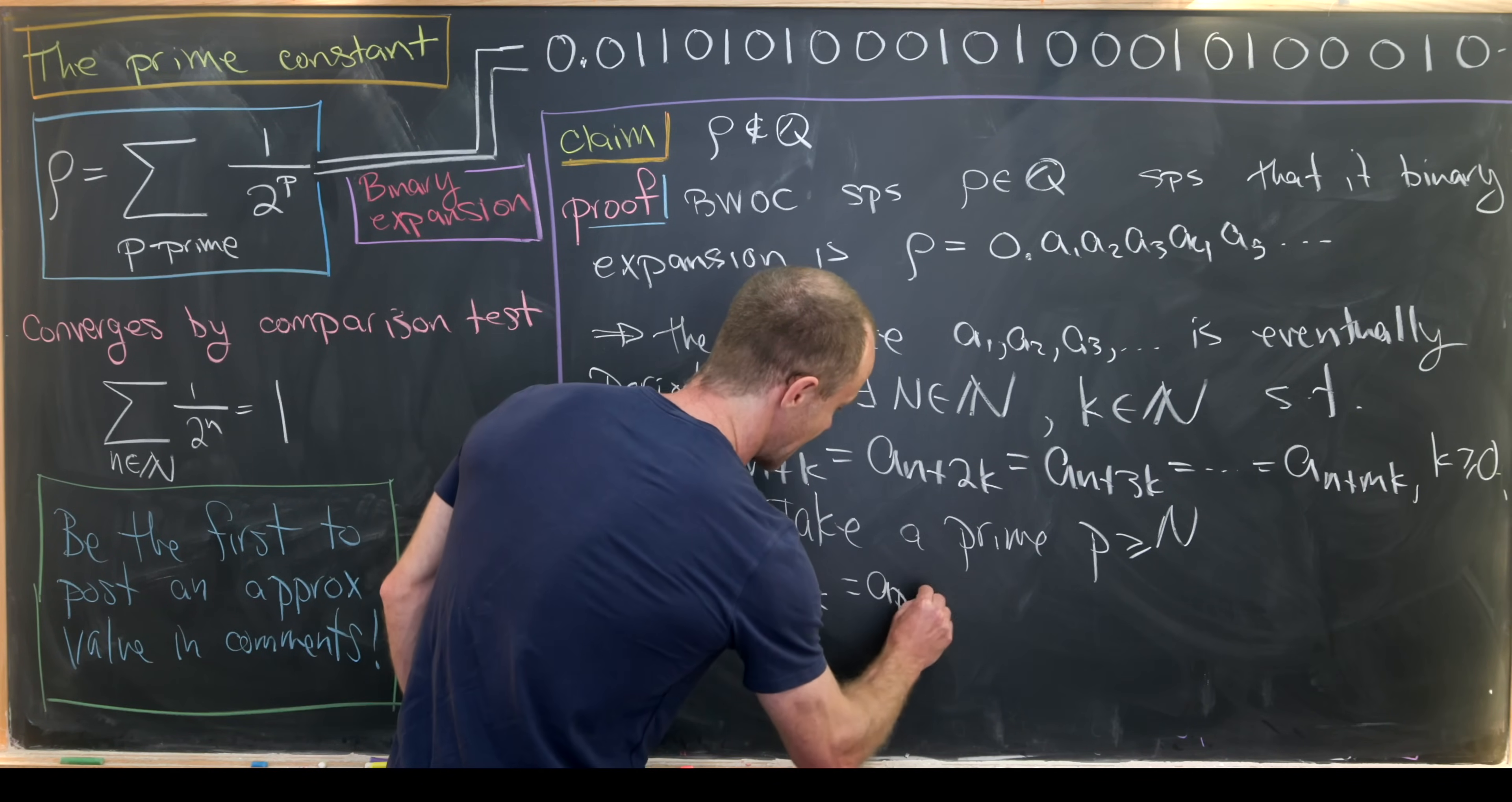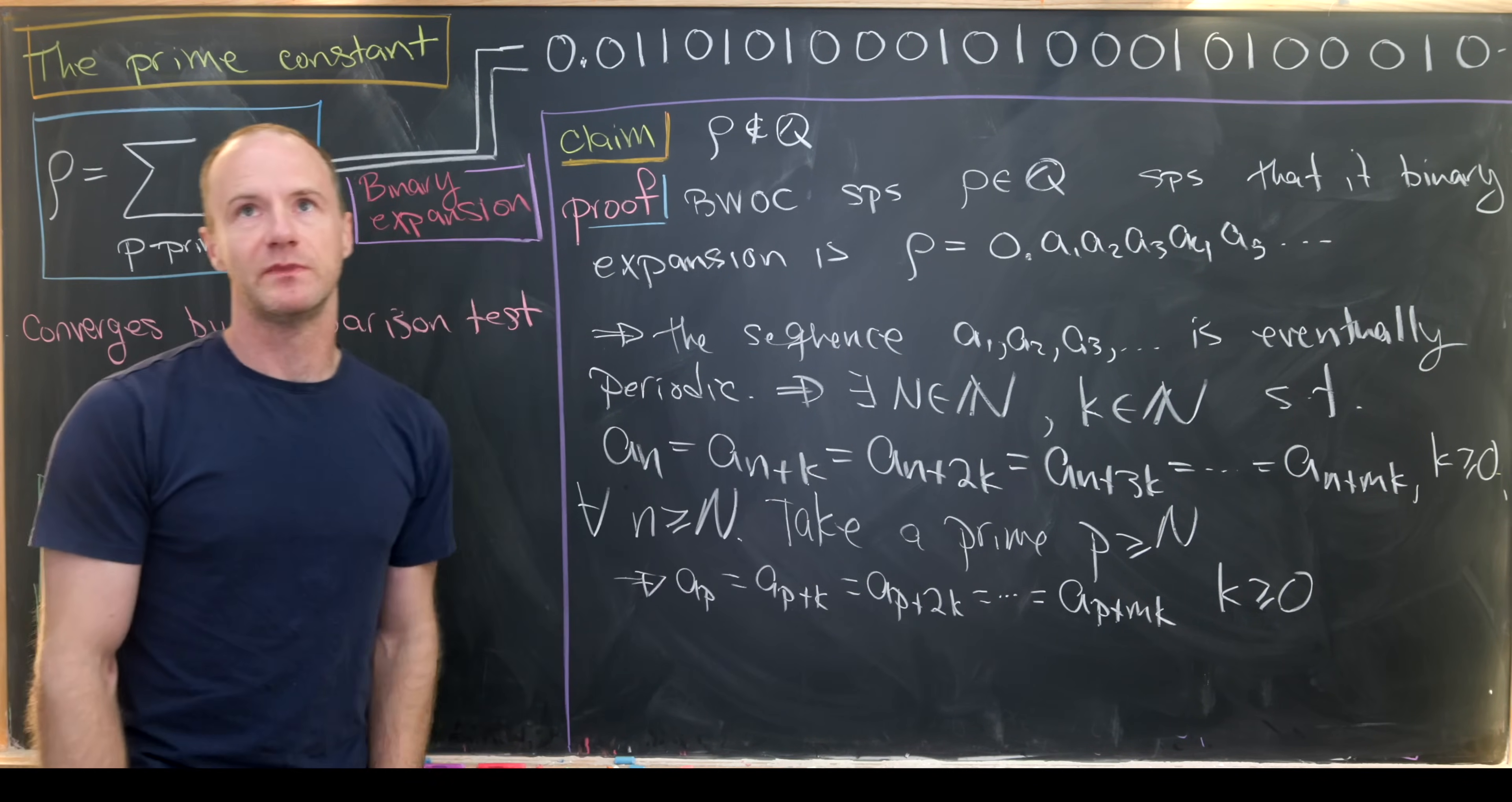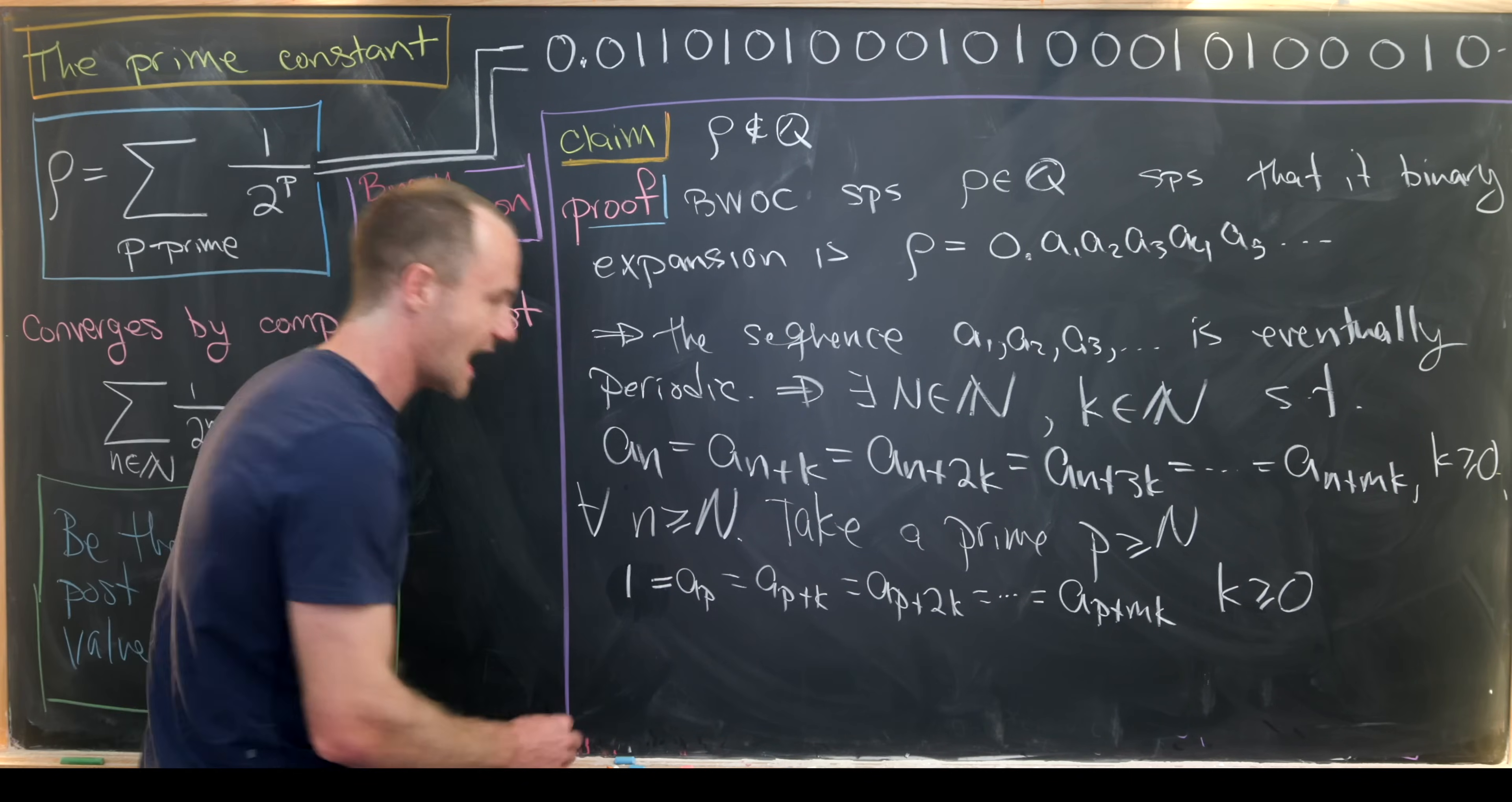And then by this periodicity, that tells us that a sub p is the same thing as a sub p plus k, which is the same thing as a sub p plus 2k, which is the same thing as a sub p plus mk. This is going to be for all k bigger than or equal to zero. So we get that periodicity after this point capital N. Again, because we have infinitely many primes, we can always have to find a prime that's bigger than that capital N. And now we're going to use the fact that we know that a sub p is equal to 1. And that's because p is a prime number.